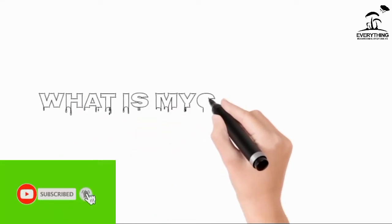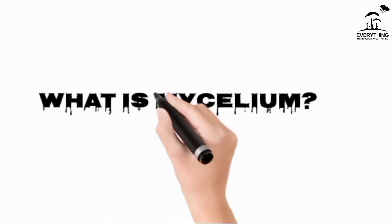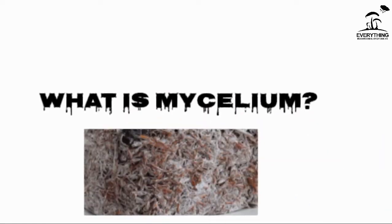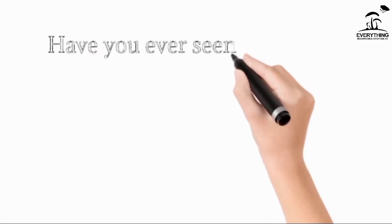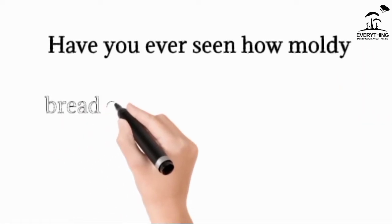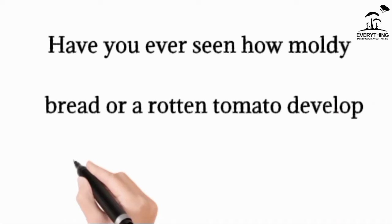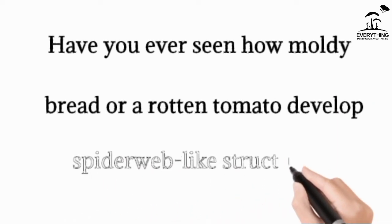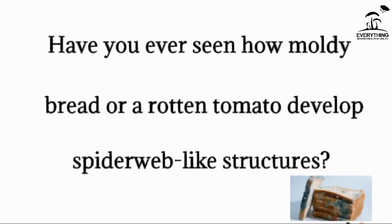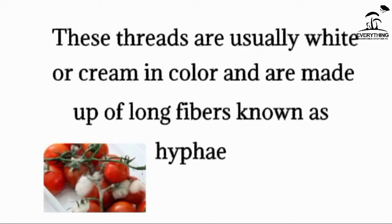When it comes to mushroom production, we only see the mushroom but we forget that mushroom actually developed from mycelium. So what is a mycelium? Have you ever seen a moldy bread or rotten tomatoes develop a spider web-like structure? Mycelium develops in a thread-like structure and they are the key stage in mushroom production. The mushroom is the fruiting body that you see, but the key stage or starting point of mushroom is mycelium.